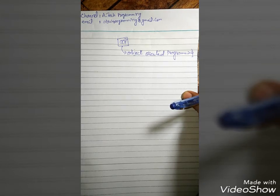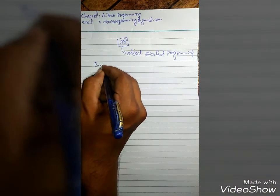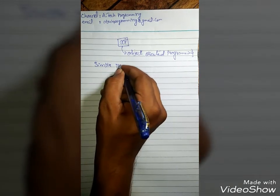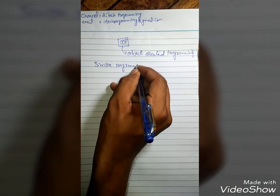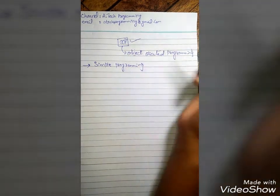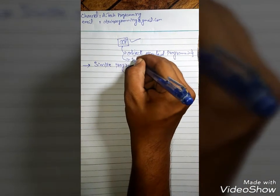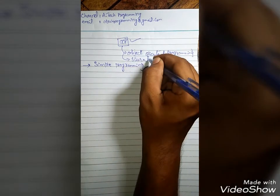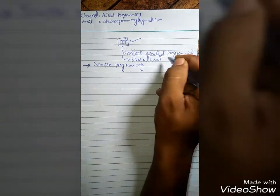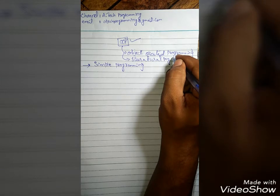So why do we need OOP, even though we were able to solve a particular task through simple programming? If it was possible to solve a particular task with simple programming, then why do we need OOP? Actually, OOP is a structural programming — or we can say it is a modular programming.